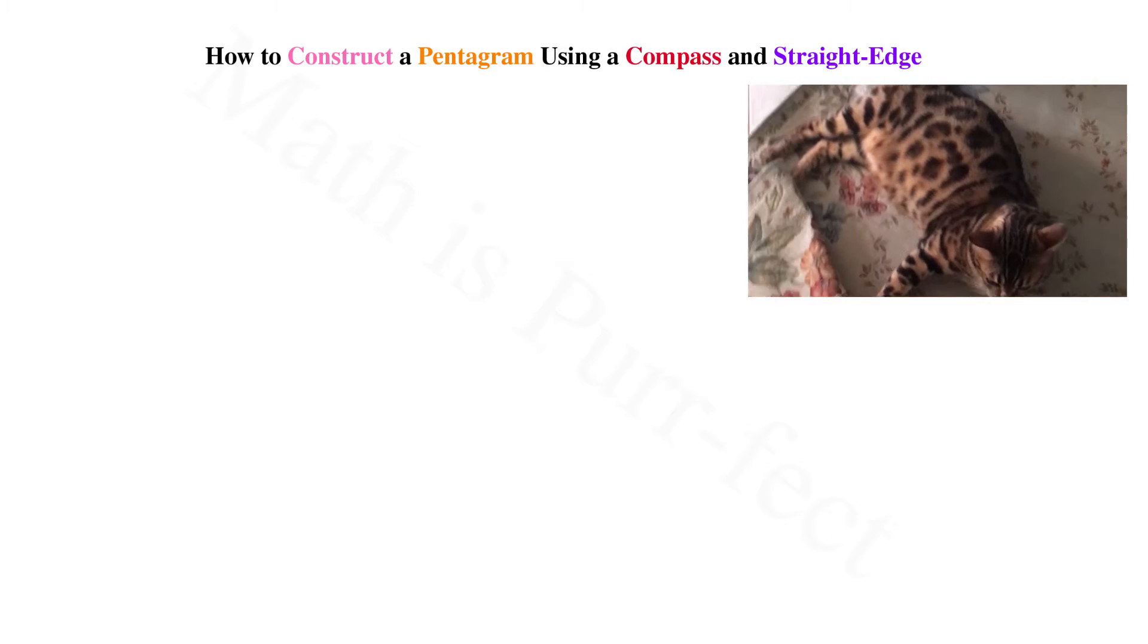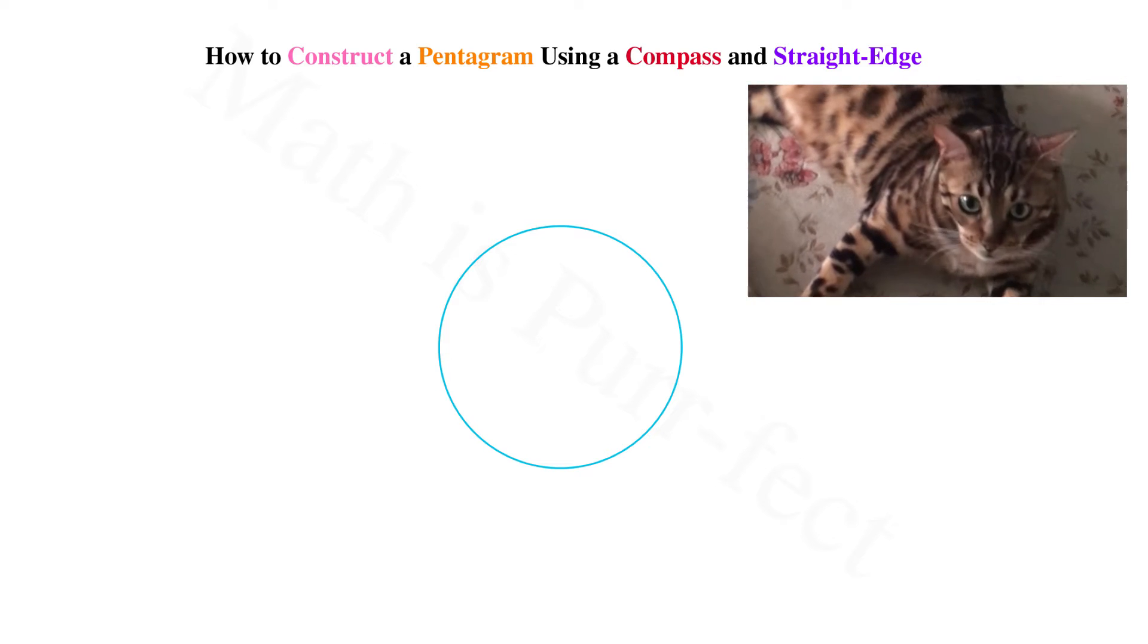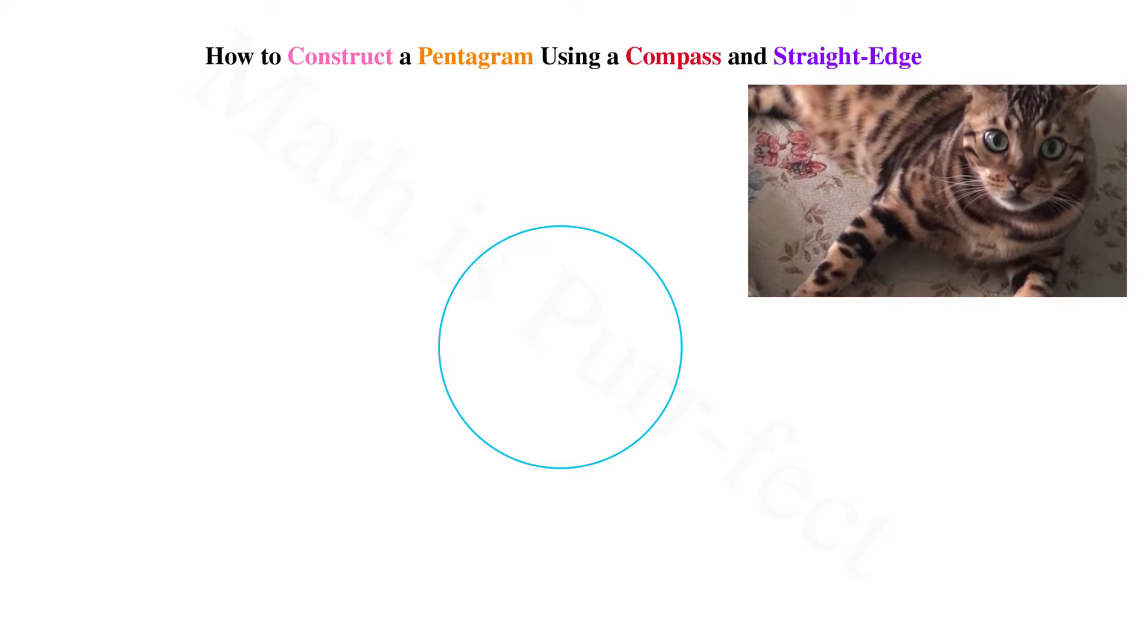To begin, let's draw a circle. The circle is very important as all regular polygons have their vertices on the circumference of a circle.